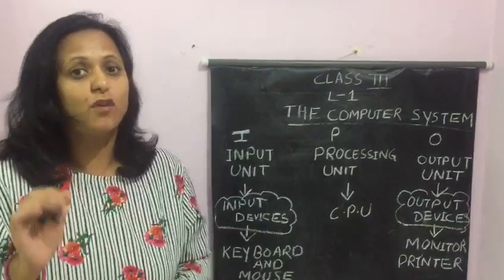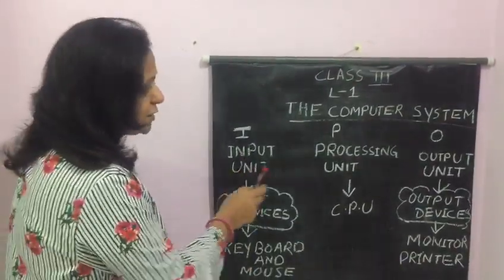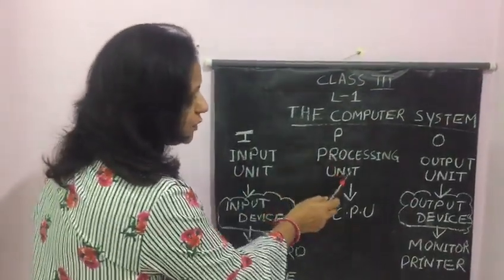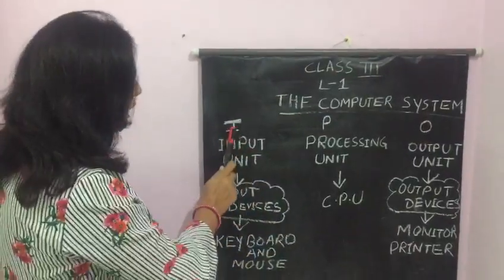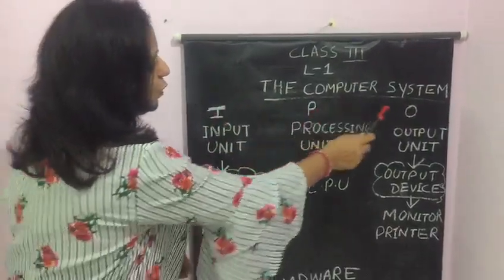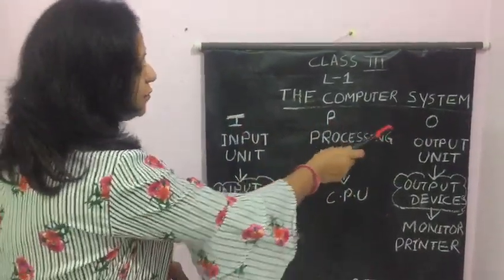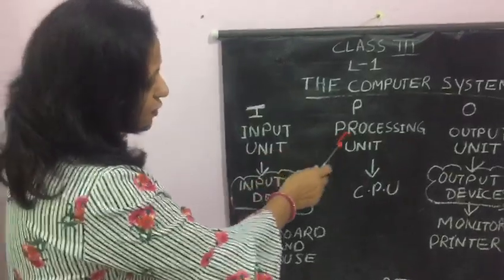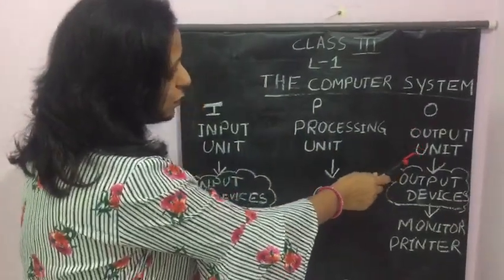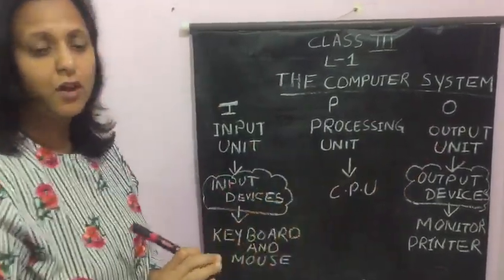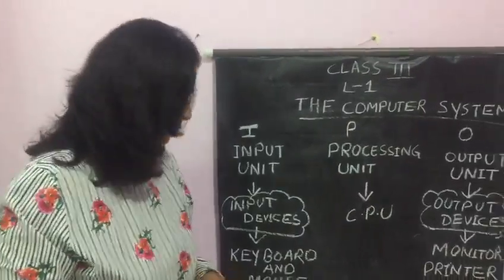A computer system consists of three units: input unit, processing unit, and output unit. This is also called IPO. The full form of IPO is input unit, processing unit, and output unit. This is also called the IPO cycle.